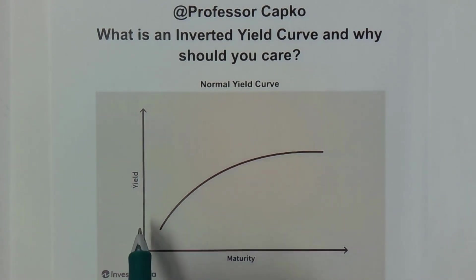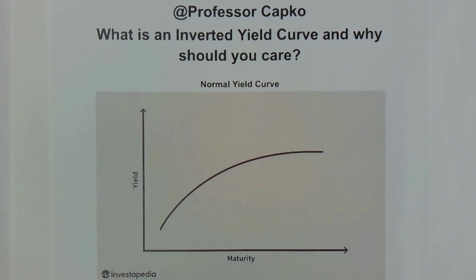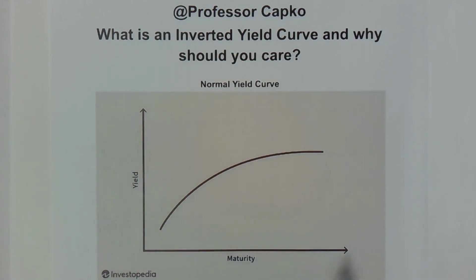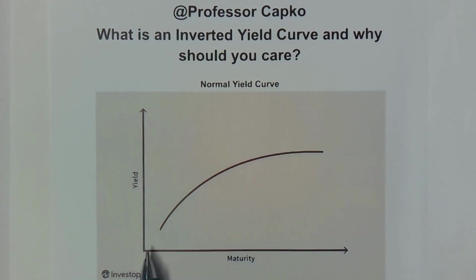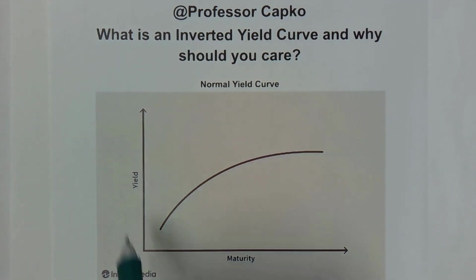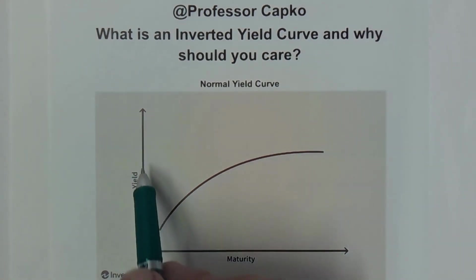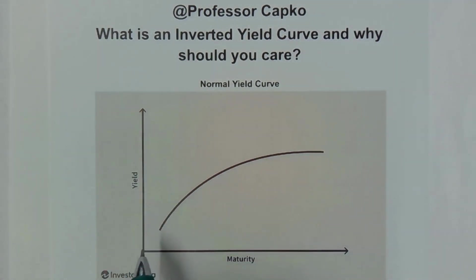We're looking at bonds graphed on a yield curve with various maturity dates. Along the x-axis we have maturity dates — maybe it's a one-month bond, maybe a three-year bond, maybe a ten-year bond, or even a thirty-year bond way out on the far end. So this end is closer to today's date and this end is further away.